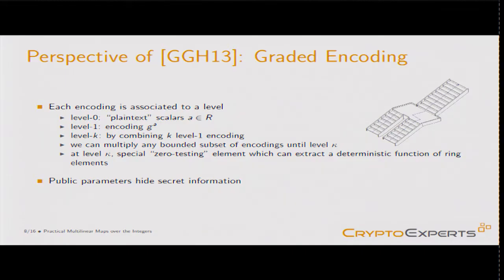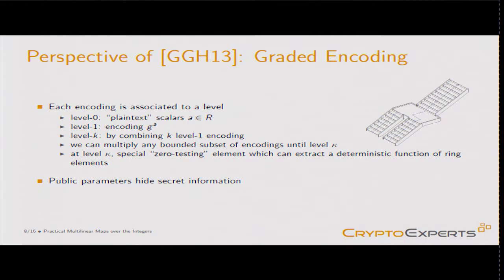The idea is to use graded encodings. At level zero you have your scalar elements of the ring; encodings are at level one, so you have a mask. You can add elements of the same level, and you can multiply elements of different levels but the level grows. At some point you reach a top level where you can extract information, but if you go above this level you lose all the information — you get something that seems random.